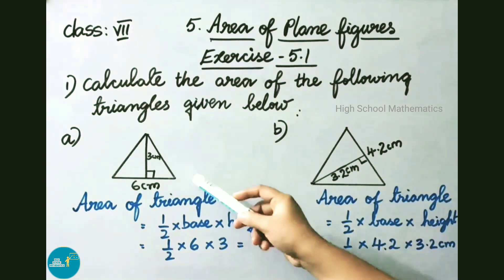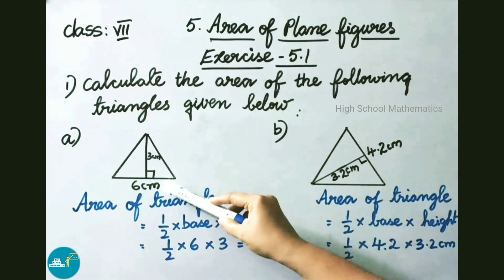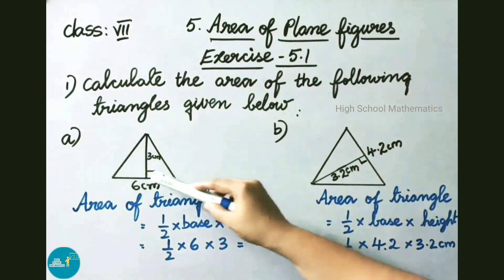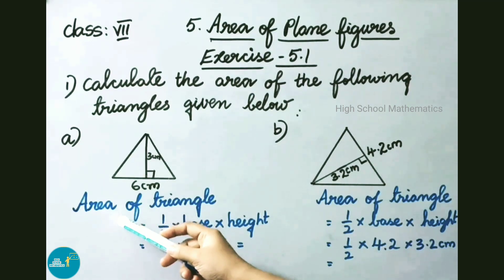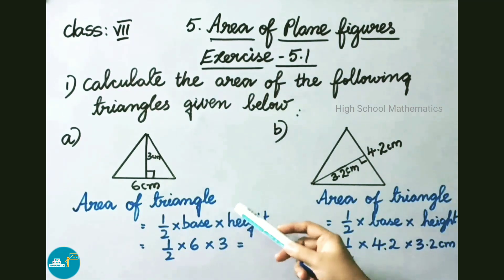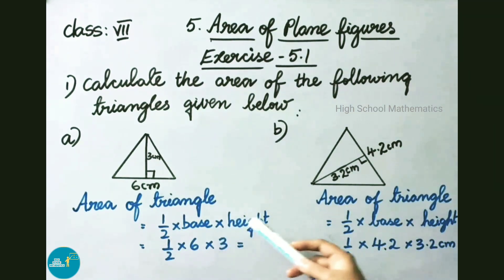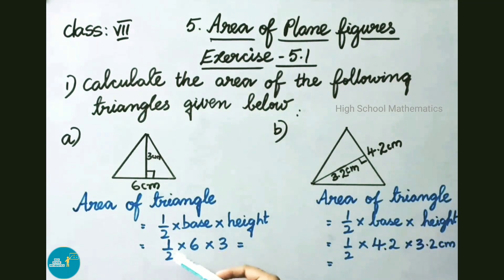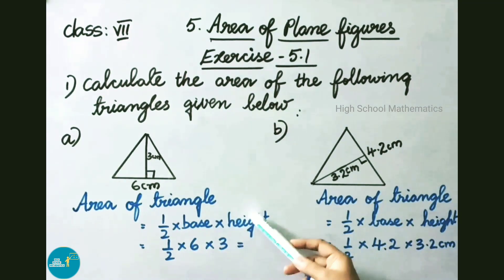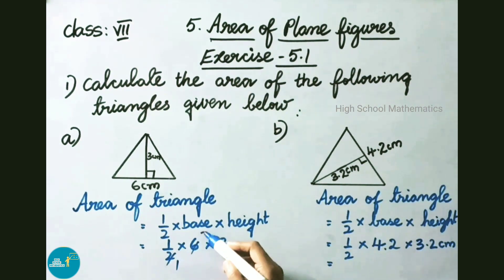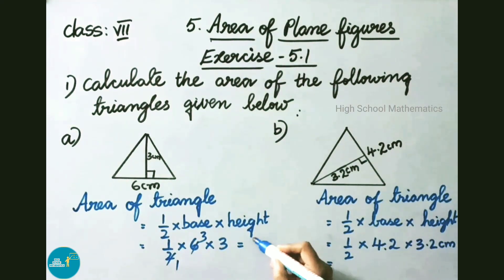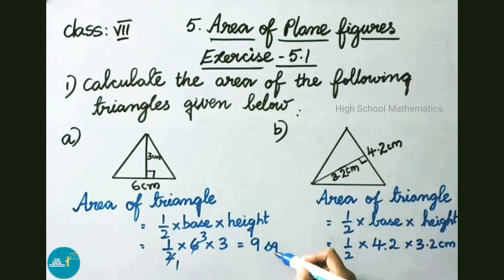See the first one. Here they are given a triangle with base 6 cm and height 3 cm. We know the formula for area of triangle is half into base into height. That equals to half into 6 cm into 3 cm. Multiplying 3 into 3 gives 9 square cm.